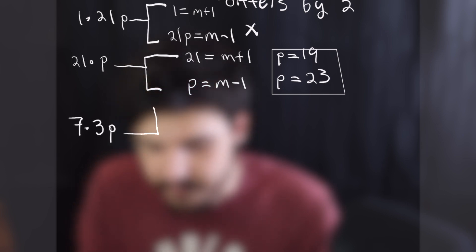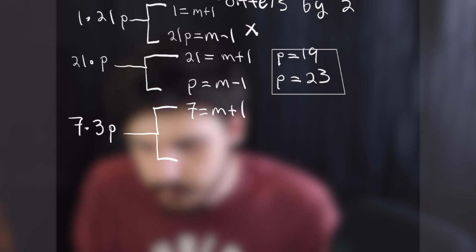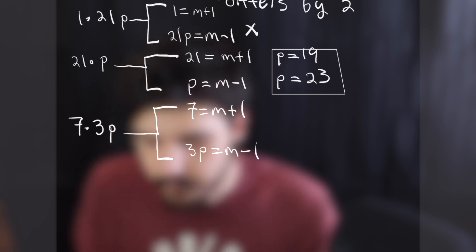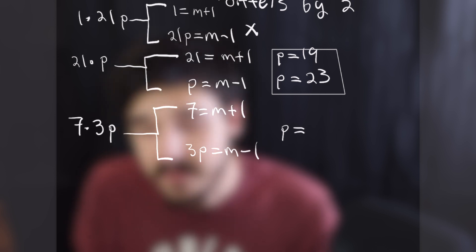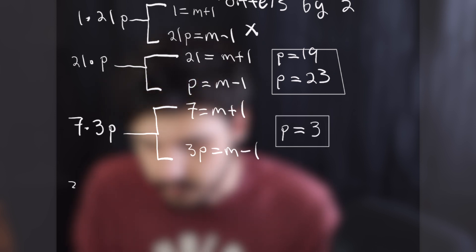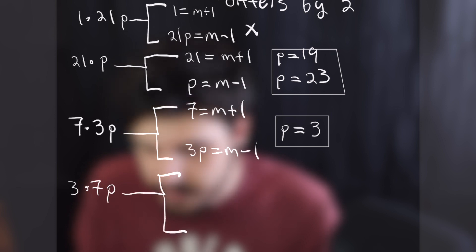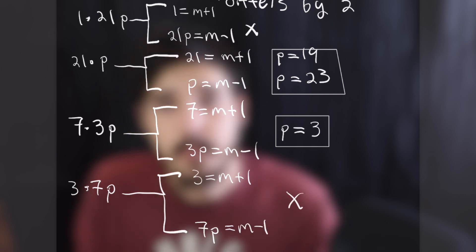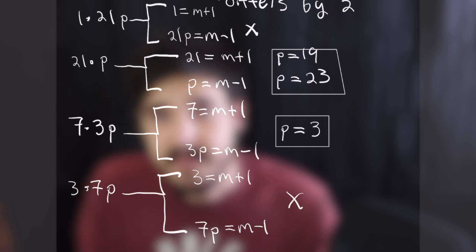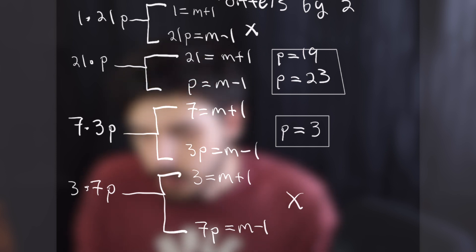Trying 7 times 3p gives m+1 equals 7 and 3p equals m-1. Plugging in p equals 3 gives 3p equals 9, which differs from 7 by 2 — one more solution. Trying 3 times 7p gives m+1 equals 3 and 7p equals m-1, and there is no prime that makes the left-hand side 5 or 1. So our only three solutions are p equals 19, p equals 23, and p equals 3, and you can easily verify that each gives a perfect square.